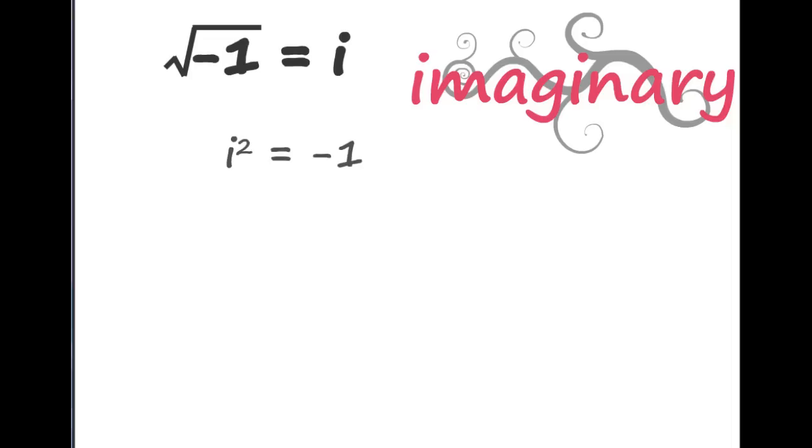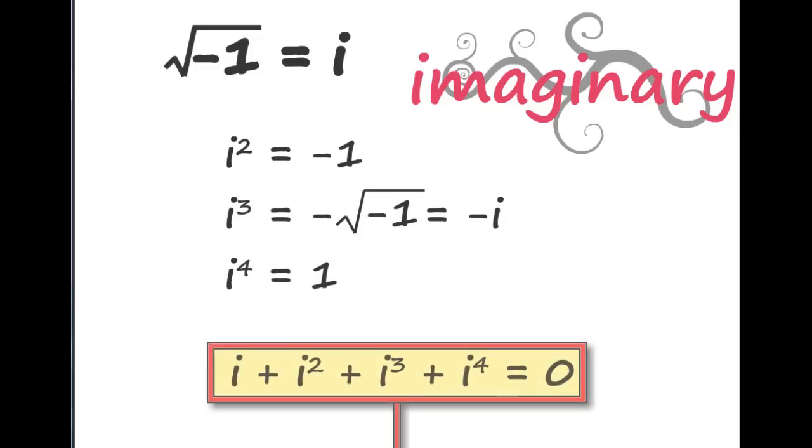So, root of minus 1 equals i. i square equals minus 1. i cube equals minus i. i raised to 4 equals 1. Thus, we see that i plus i square plus i cube plus i raised to 4 equals 0. If there can be imaginary numbers, there surely can be some imaginary mathematics associated with them.